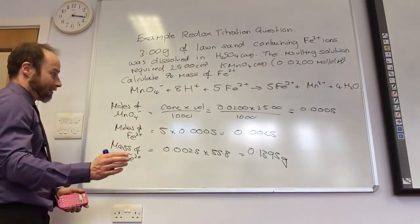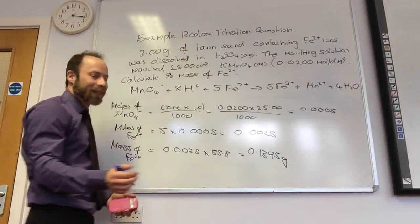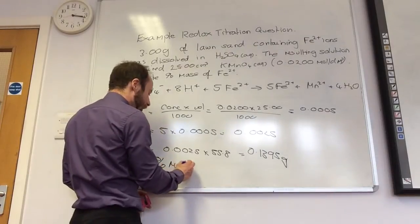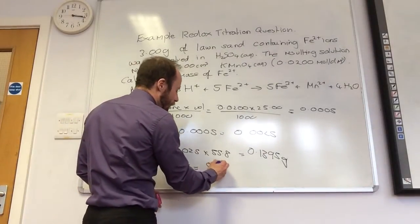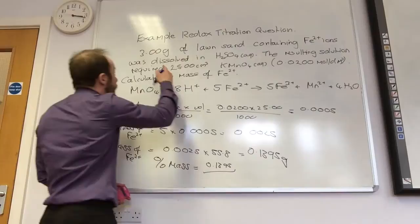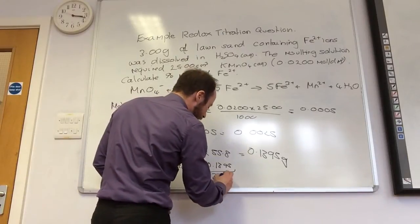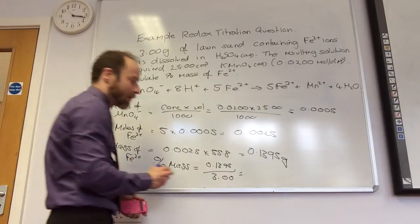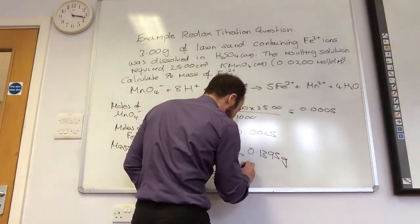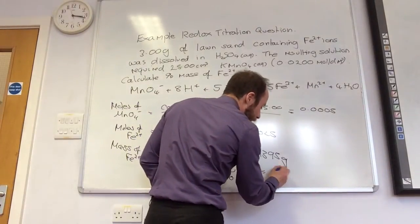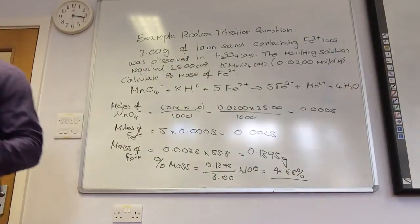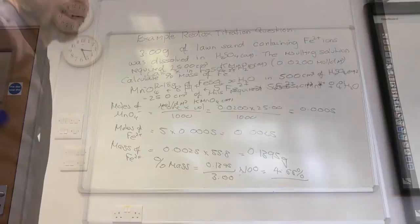And then you put it over the 3 grams, and just... Yeah, and now percentage of mass is my 0.1395 grams, over the 3 grams of the original, of the whole sample. And that counts. 4.65. Oh, and times by 100. Oh, and times by 100. Yeah, sorry. What? 4.65.